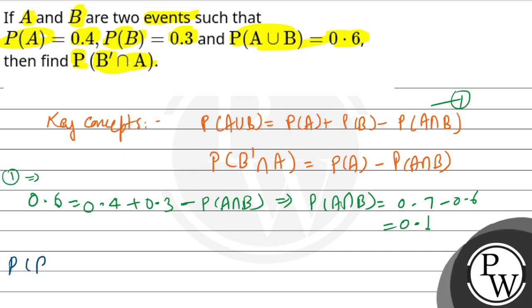So now we will take P of B prime intersection A, and what it is? P of A, that is 0.4, minus P of A intersection B, that is 0.1. We have calculated this value. So it is 0.3. So this is your correct answer. Hope you understood it well. Thank you.